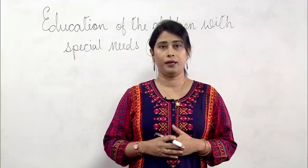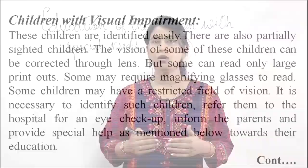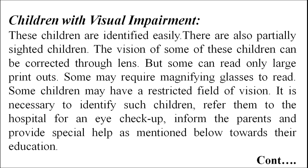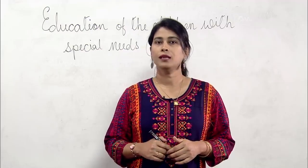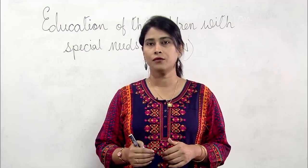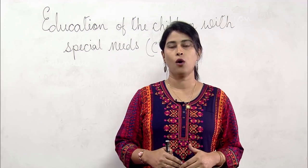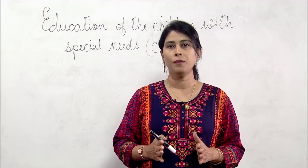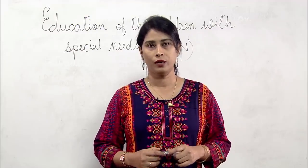Now, children with visual impairment. These children are identified very easily. These are also partially sighted children. The vision of some of these children can be corrected through a lens, but some can read only large printouts. Some may require magnifying glasses to read. Some children may have restricted field of vision. It is necessary to identify such children and refer them to the hospital for an eye checkup. Inform the parents and provide special help towards their education.